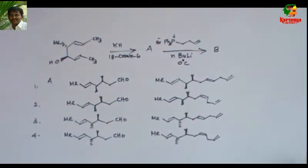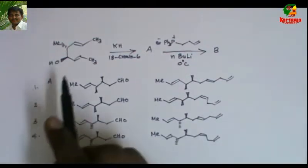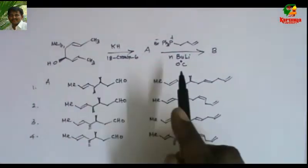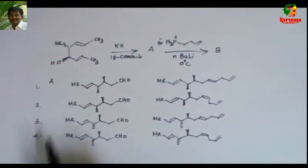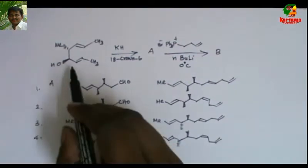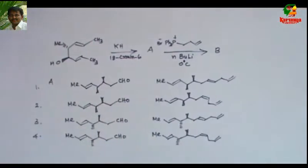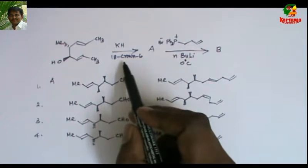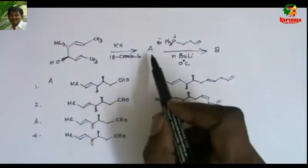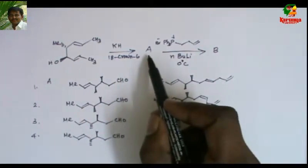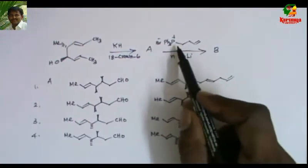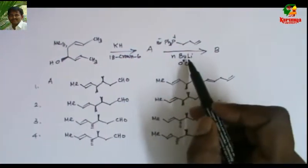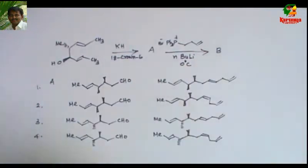Today I am going to solve a problem which involves Oxicope rearrangement and Wittig reaction. Here is the problem: when this 1,5-diene is treated with potassium hydride in the presence of crown ether, it gives A. When compound A is treated with this Wittig salt in the presence of n-butyllithium, it gives B. What are the structures of A and B?